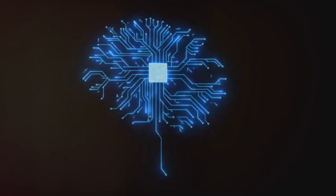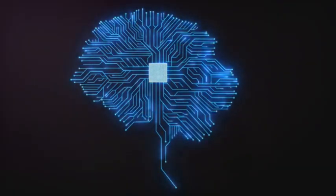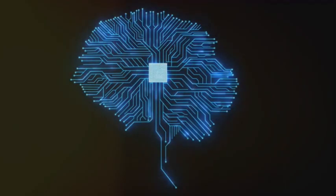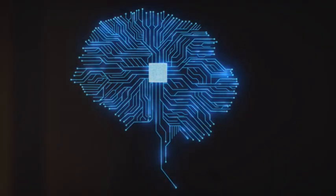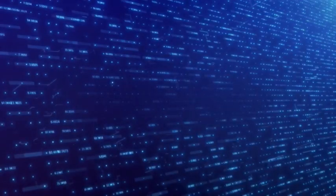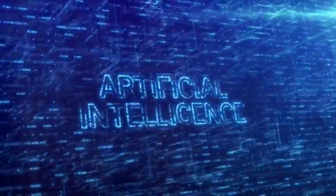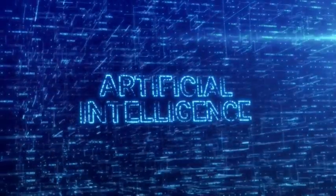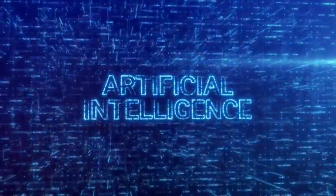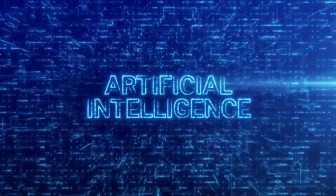Neuralink, spearheaded by the visionary Elon Musk, is an ambitious project that seeks to establish a direct interface between machines and the human mind. By creating ultra-high bandwidth brain-machine interfaces, Neuralink aims to merge our minds with artificial intelligence, potentially opening up a whole new world of possibilities.